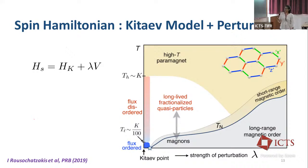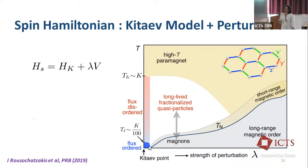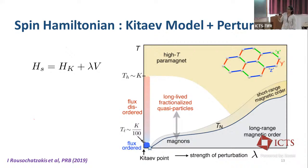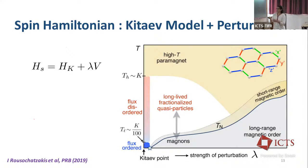For the magnetism of the system, we look at the spin Hamiltonian of alpha ruthenium chloride, which can be modeled with a Kitaev model plus some perturbations. The strength of the perturbations is controlled by lambda. These perturbations are responsible for bringing about ordering in the system — for example, a Heisenberg term. This schematic phase diagram shows the strength of the perturbation on the x-axis and temperature on the y-axis.